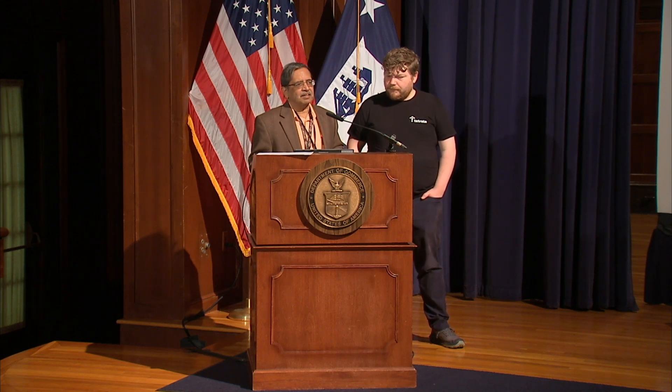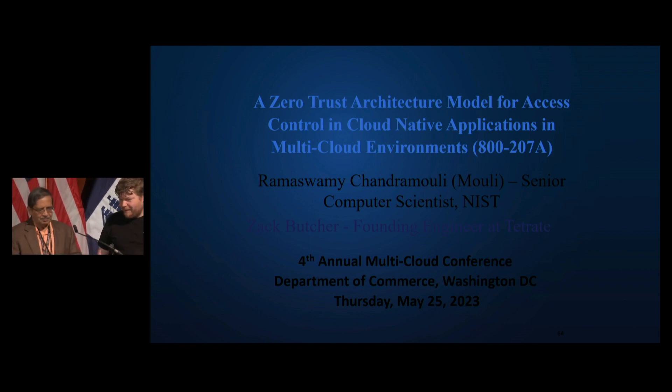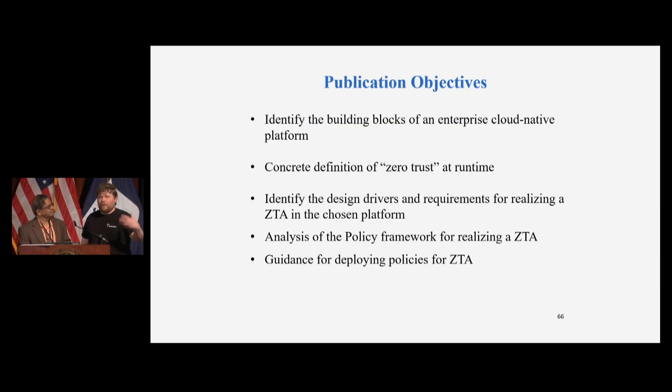Today we are going to talk about a document that we have put up for public comments, namely 800-207A, which underlies the principles in terms of different levels of policies and how to make it happen — how to realize the zero-trust architecture, especially for cloud-native applications. The real goal here is to give some kind of tangible definition to zero trust.